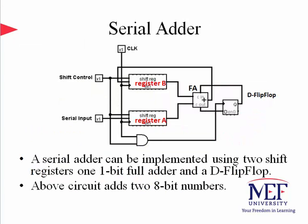Most operations on hardware are done in parallel, including binary addition. The main motivation behind parallel operation is speed. Serial operations take more clock cycles to complete an execution; however, serial implementations usually require fewer hardware logic, which means less silicon area on the chip. So there is a trade-off. Here is another example of serial operation called a Serial Adder using shift registers.